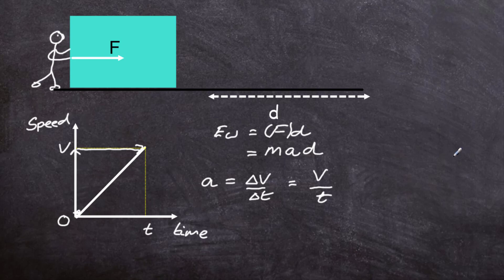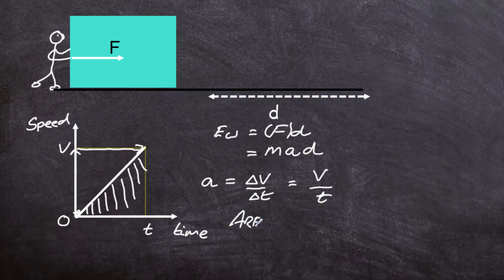What about the distance travelled by the block? We can find that from the speed-time graph as well. The area of a speed-time graph gives the distance travelled. In this case the area equals one half times the base times the height of the triangle, which is one half times T times V.